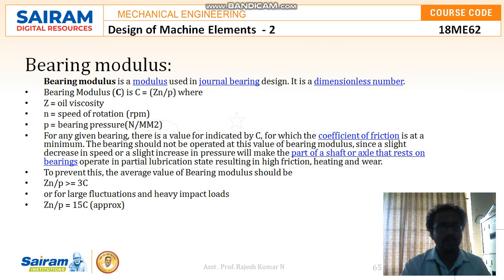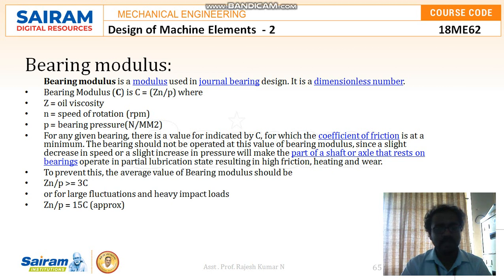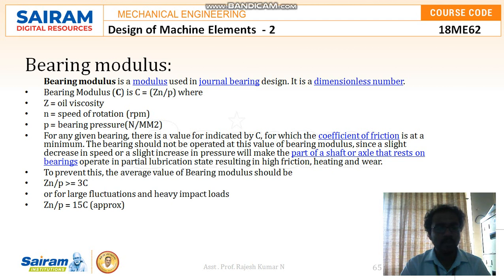Two important concepts are bearing modulus and quotient of friction. Bearing modulus is used in journal bearing design; it is a dimensionless number denoted C, with formula C = ZN/P, where Z is oil viscosity, N is speed in revolutions per minute, and P is bearing pressure in N/mm². For any given bearing there is a value of C at which the quotient of friction is minimum, but the bearing should not be operated at this value since a slight decrease in speed or increase in pressure will cause partial lubrication, resulting in high friction, heating, and wear. To prevent this, the average bearing modulus ZN/P should be ≥ 3C, or for large fluctuations and heavy impact loads, ZN/P ≈ 15C.